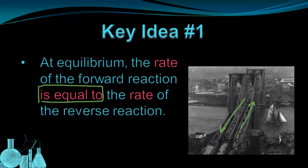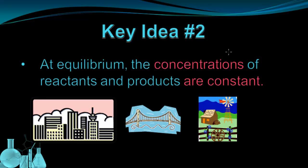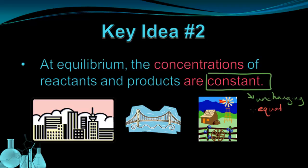There's a second idea that accompanies the rates being equal — if the rates being equal is the definition of equilibrium, then this idea is a consequence of that. At equilibrium, the concentrations of reactants and products are constant. This is the trickier part for most people. Constant simply means unchanging — it does not mean equal, and it does not mean equivalent.